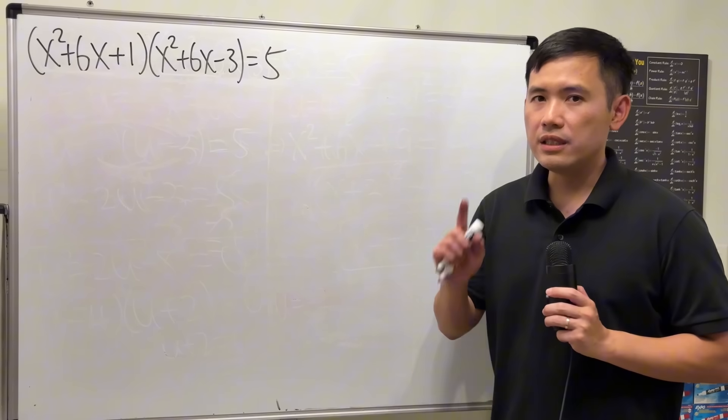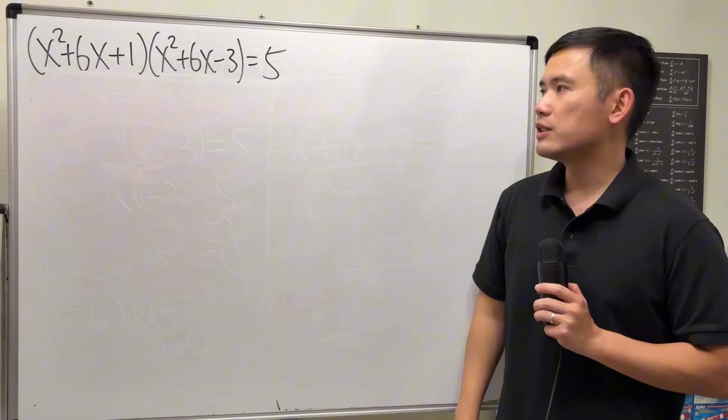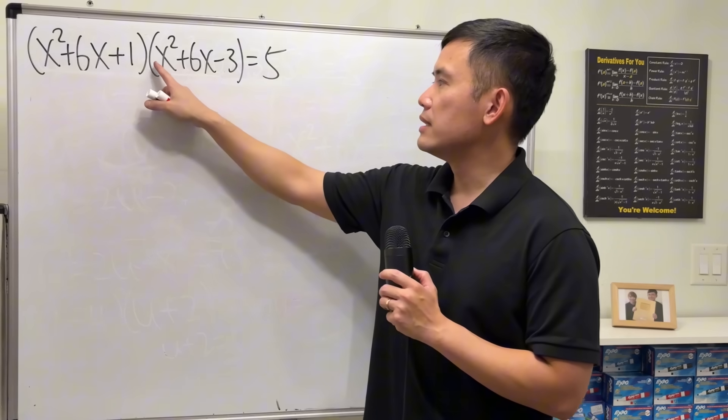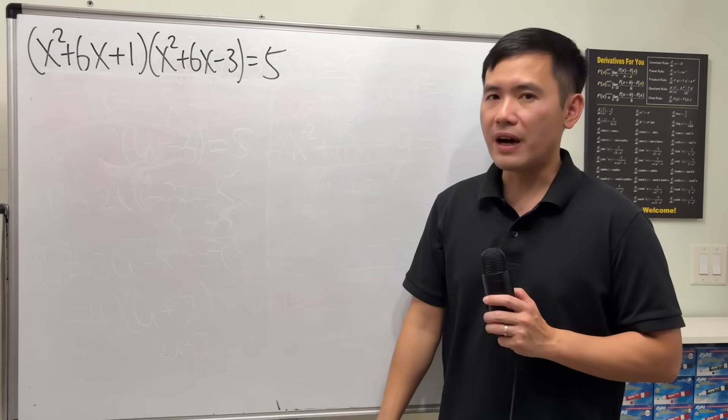Today, I want to show you guys the substitution method for solving equations. And let's take a look at this one for example. We are solving x squared plus 6x plus 1 times x squared plus 6x minus 3, and that's equal to 5.